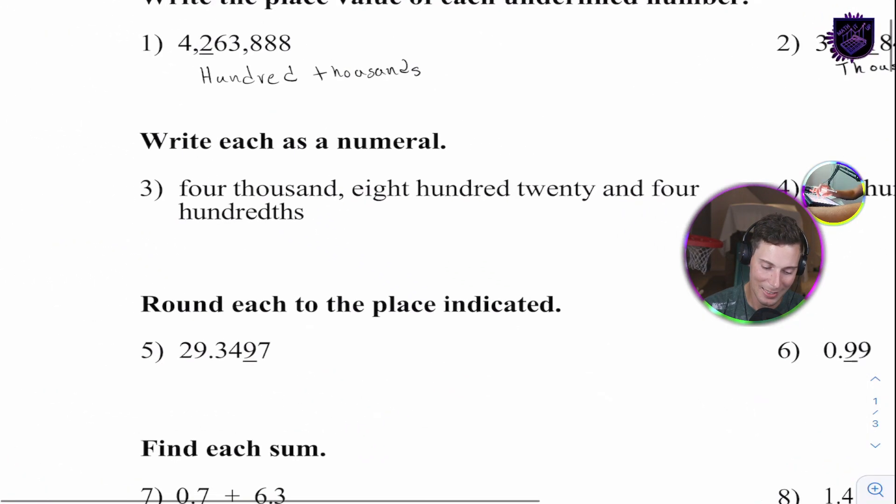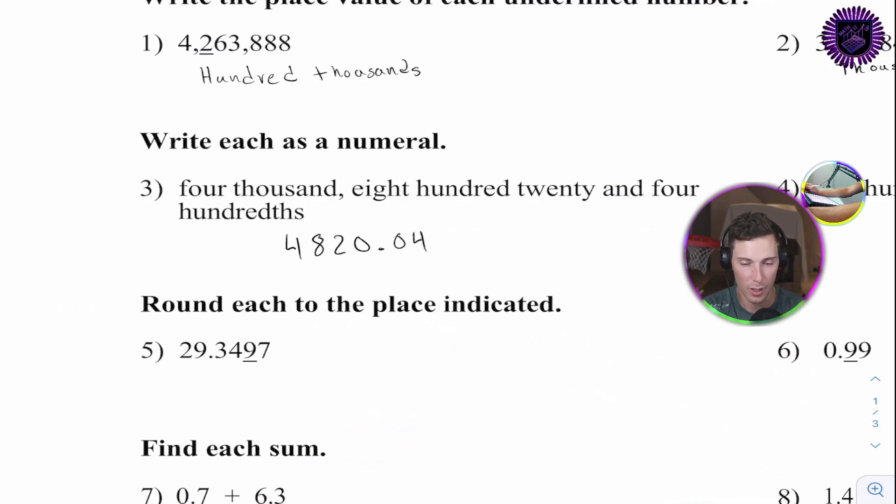Question number three. Write each numeral. Write each as a numeral. So, four thousand, eight hundred, twenty, and four hundredths. Four thousand, eight hundred, twenty, and four hundredths. Four hundredths.